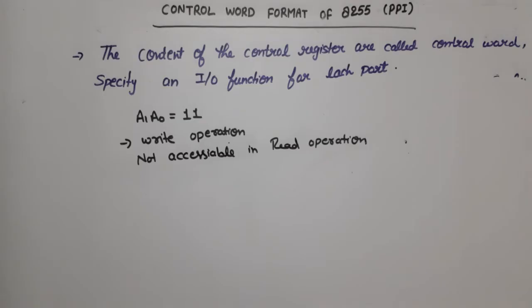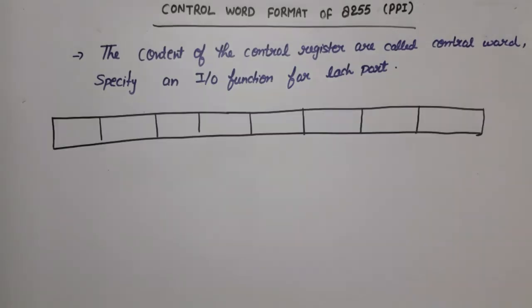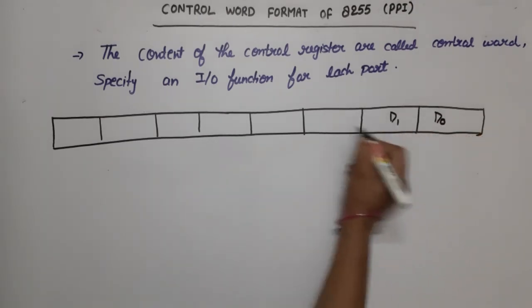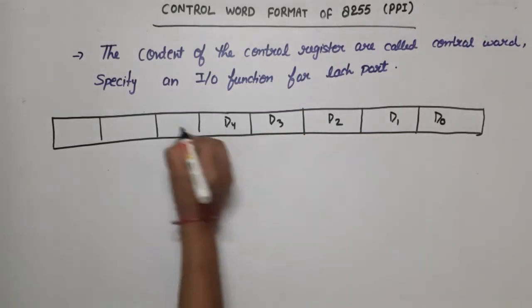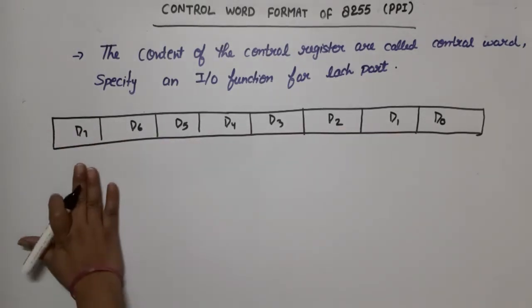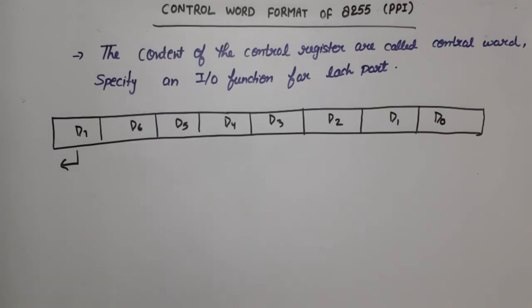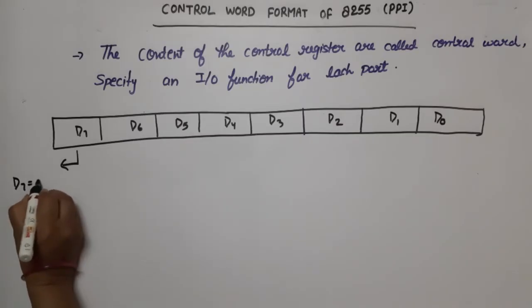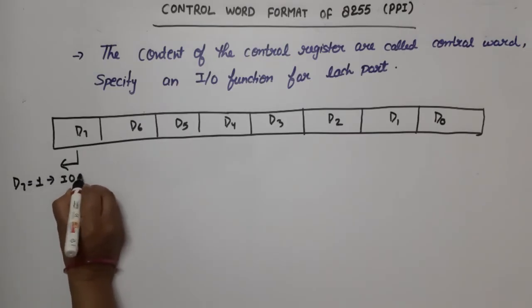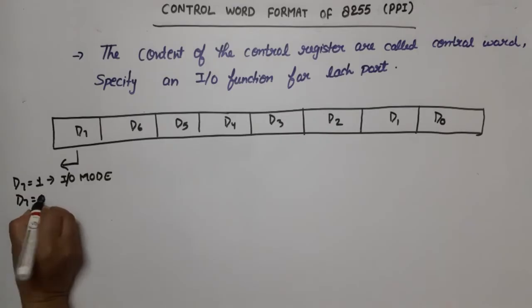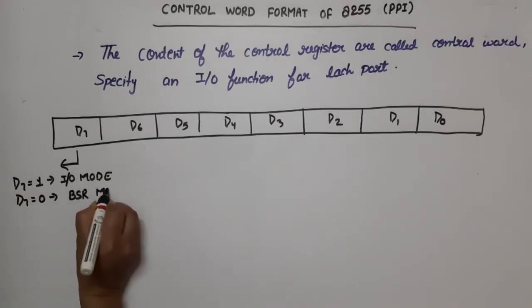The control register is an 8-bit register with bits D0, D1, D2, D3, D4, D5, D6, and D7. The function of D7 is to decide whether the format is for input/output mode or BSR mode. If D7 is equal to 1, it means input/output mode. If D7 is equal to 0, it means BSR mode.